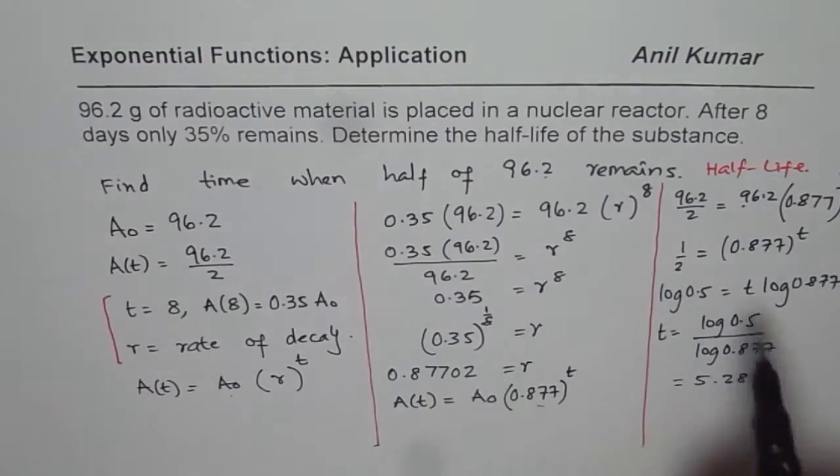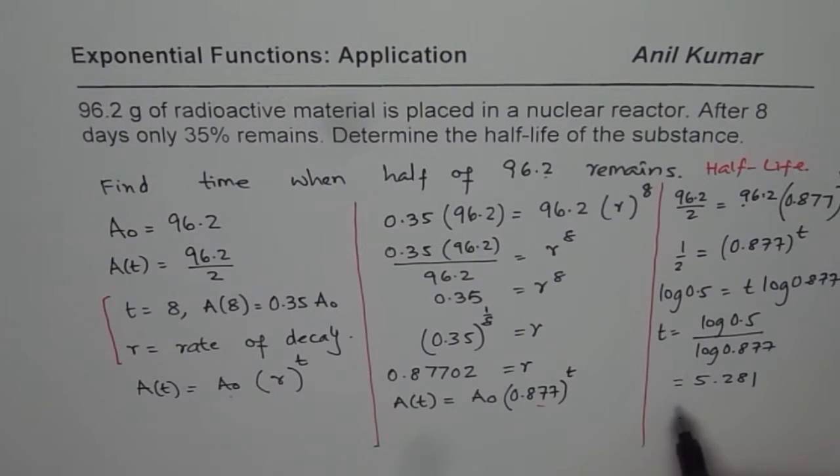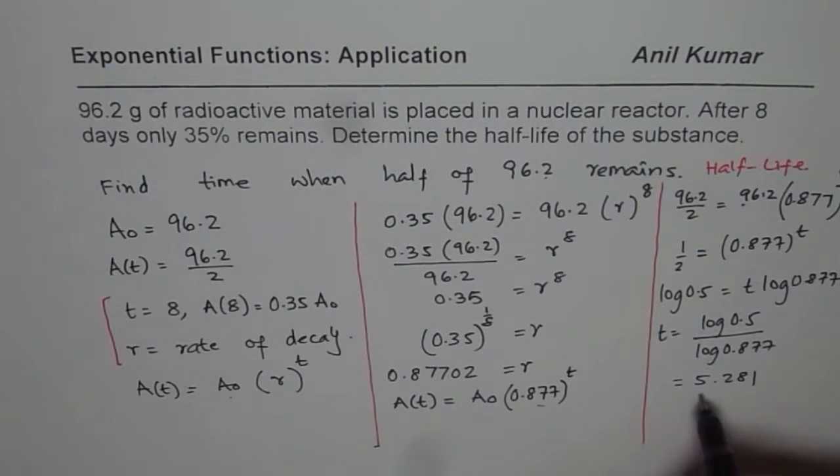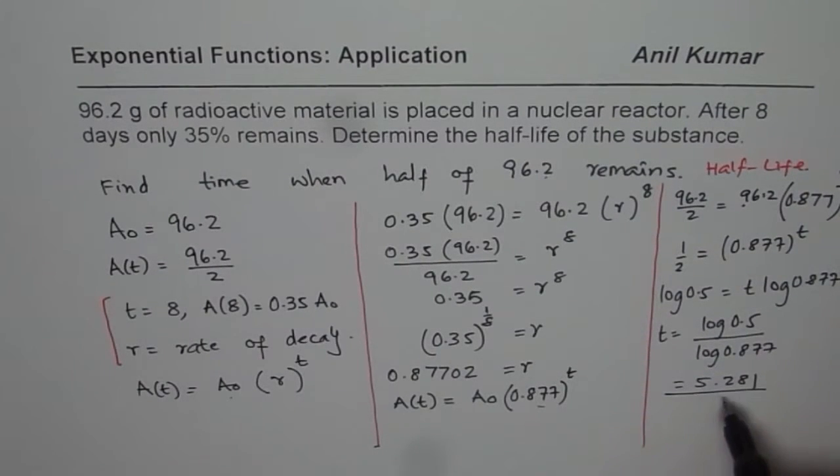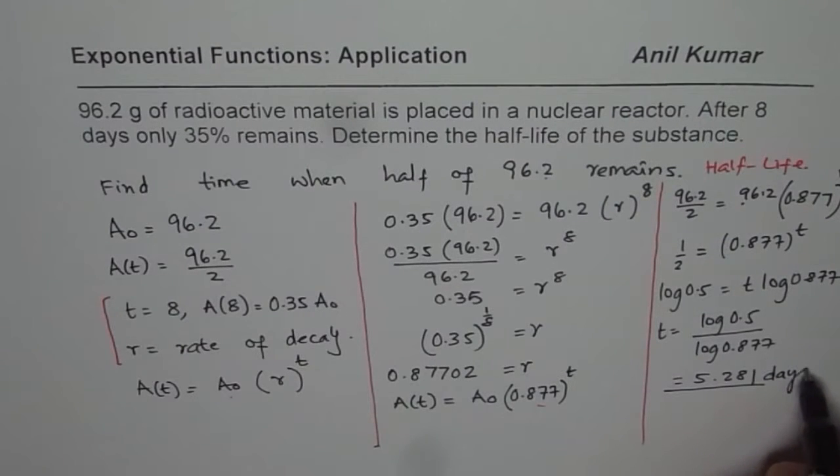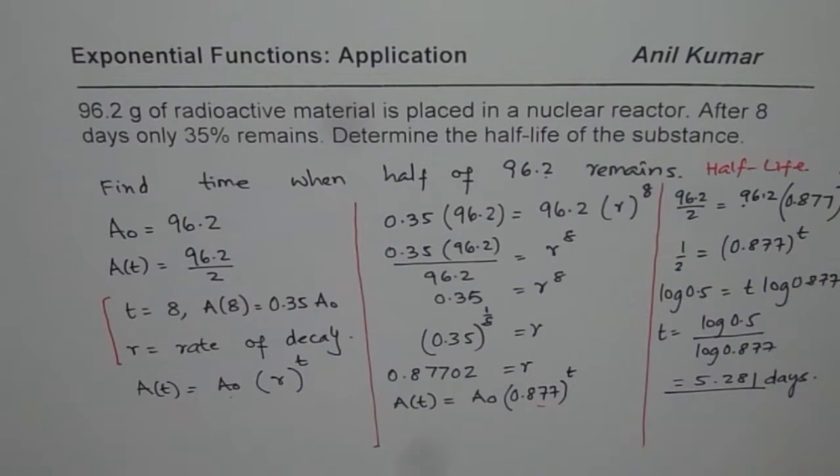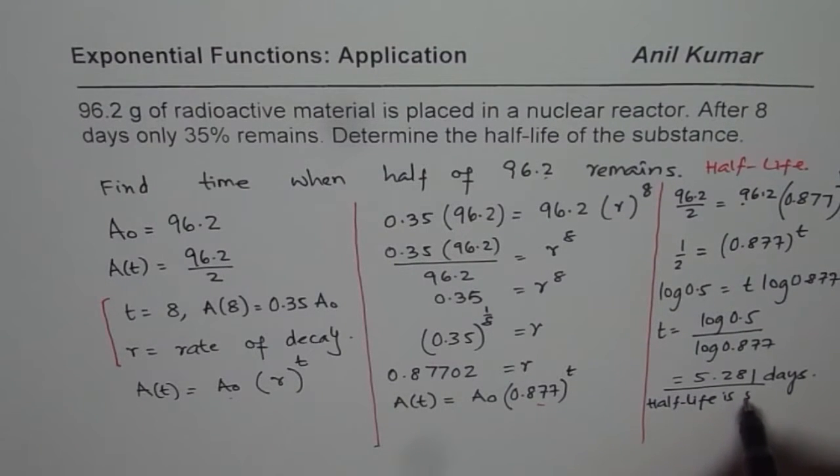So half-life for us is, in this much time, the amount would be half. So half-life for us is 5.28 and the number of units is days. So we can write on our answer that half-life is 5.28 days.